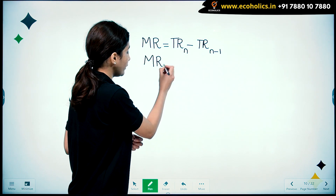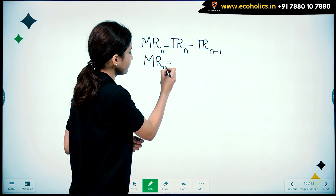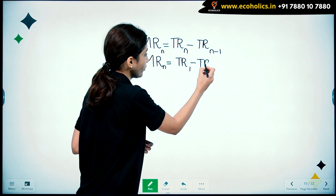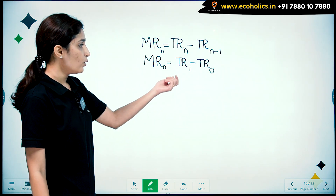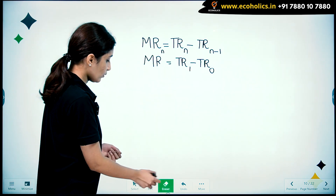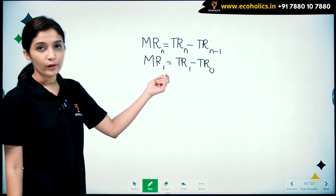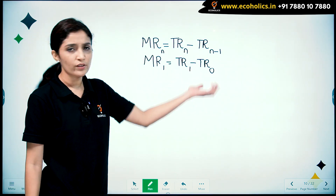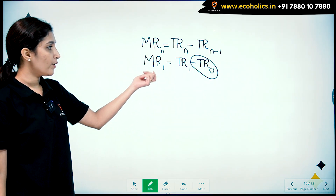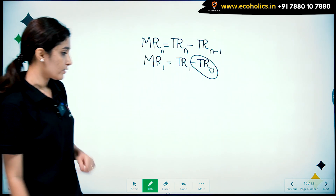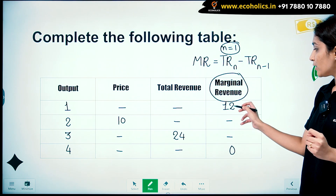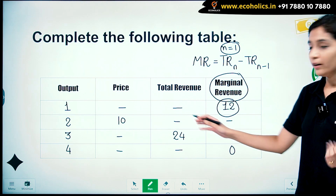Marginal revenue for the first unit will be equal to TR1, because total revenue of 0 units is 0. So marginal revenue will be equal to total revenue in this case — for the first unit, MR and TR are the same. Therefore since MR is given as 12, total revenue is also 12.